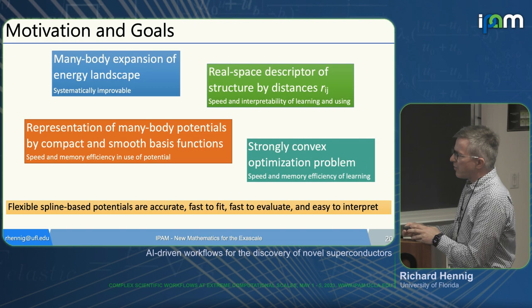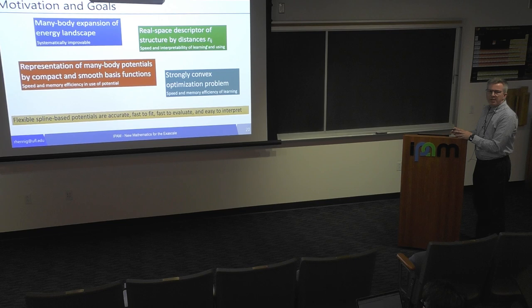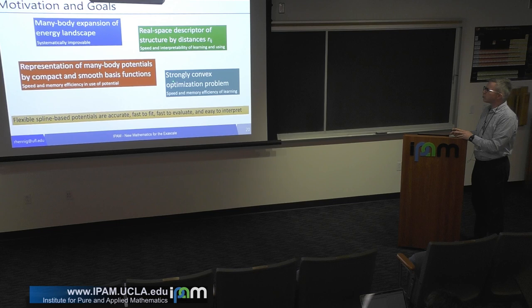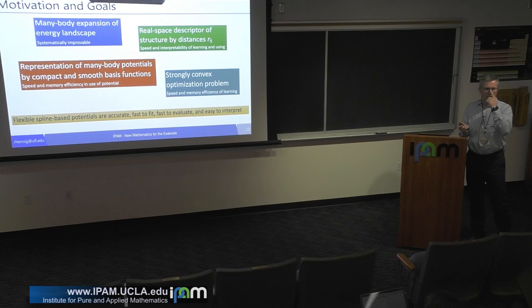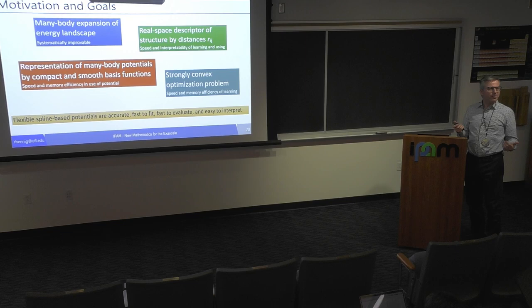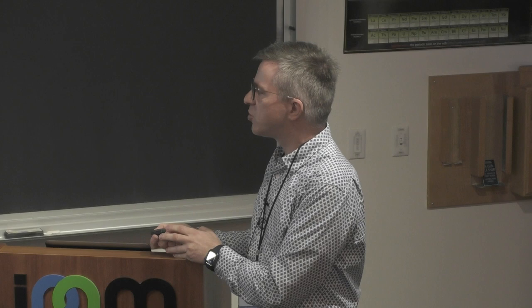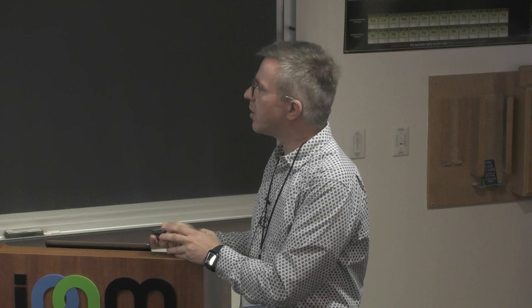Going directly to distances should help with speed and interpretability of the potentials. Another important aspect is if we represent it as a function of distance and apply any functions to it, we'd like those functions not to scale with increased resolution. We use a compact and smooth basis — B-splines — so the number of function evaluations does not scale with resolution. In the end we want to turn the problem into a strongly convex optimization problem, because we really do not like local minima. This helps with speed and memory efficiency of learning. The flexible spline-based potentials are accurate, fast to fit, fast to evaluate, and easy to interpret.